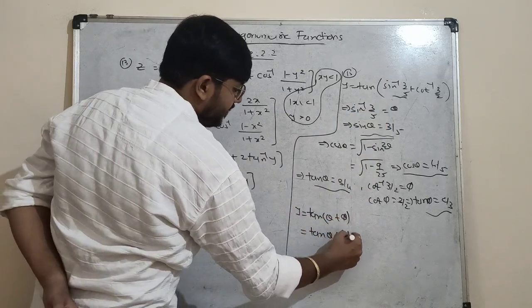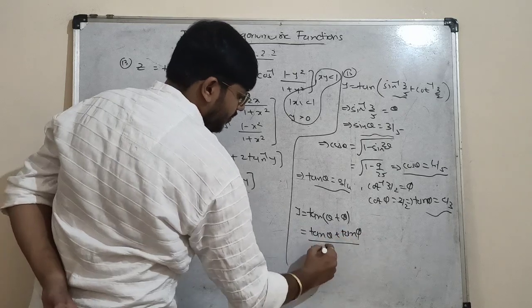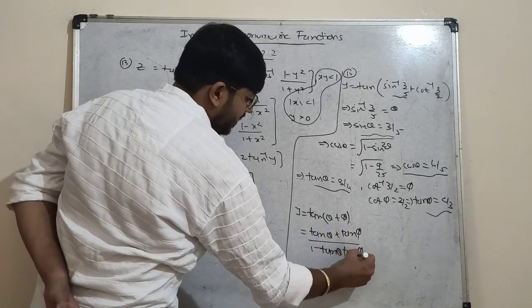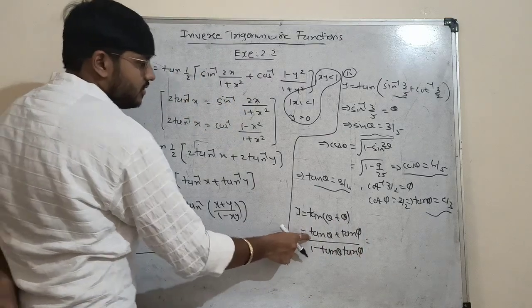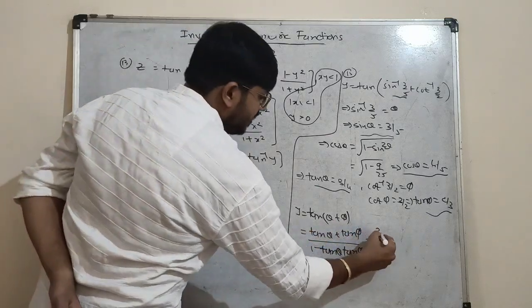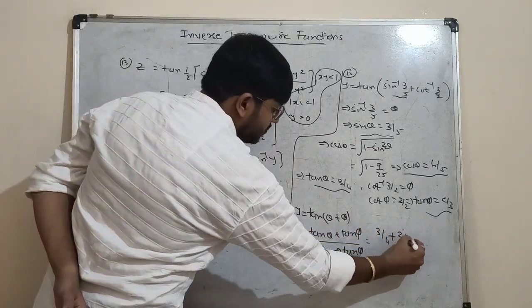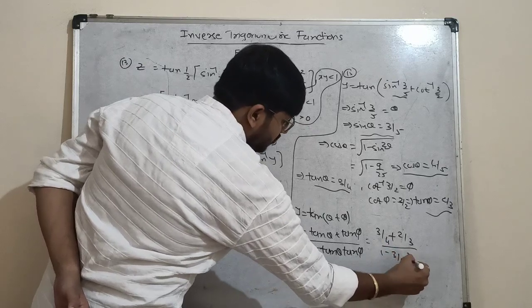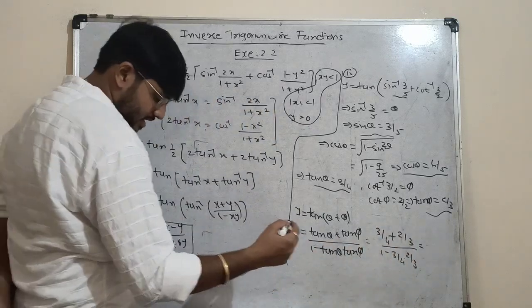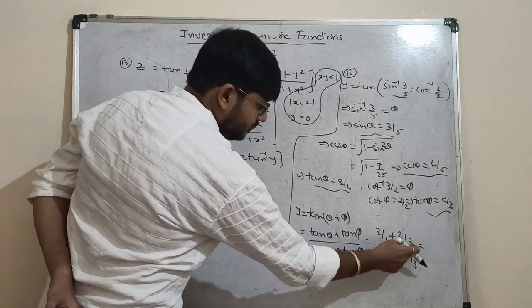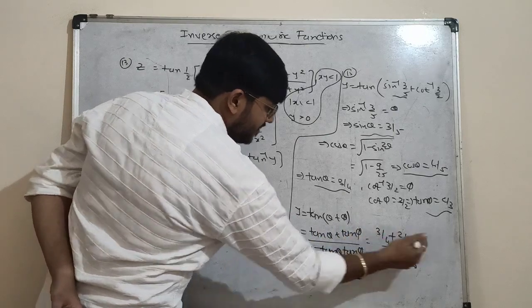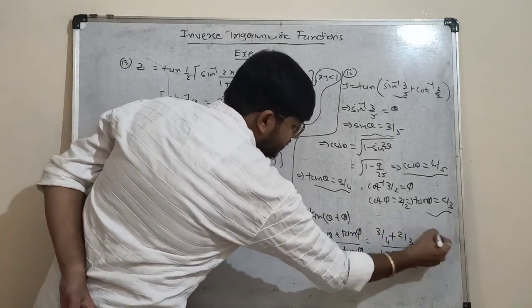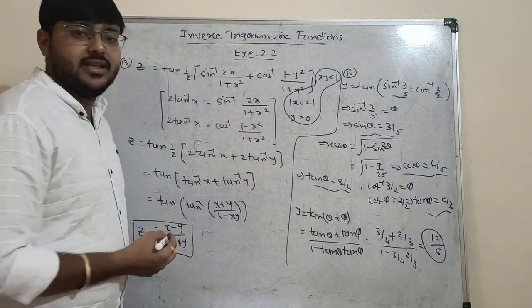Apply the formula: tan(θ + φ) = (tan θ + tan φ)/(1 - tan θ · tan φ) = (3/4 + 2/3)/(1 - (3/4)(2/3)). Solving: numerator is 9+8=17 over 12, denominator is 12-6=6 over 12, so the answer is 17/6.